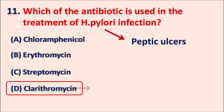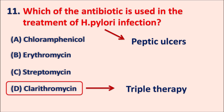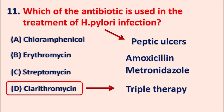Clarithromycin is an antibiotic included in triple therapy. In this triple therapy we can use proton pump inhibitors, clarithromycin, and amoxicillin. We can also have quadruple therapy where other antibiotics can be used. For treatment of H. pylori infection, the antibiotics used are clarithromycin, amoxicillin, and metronidazole.